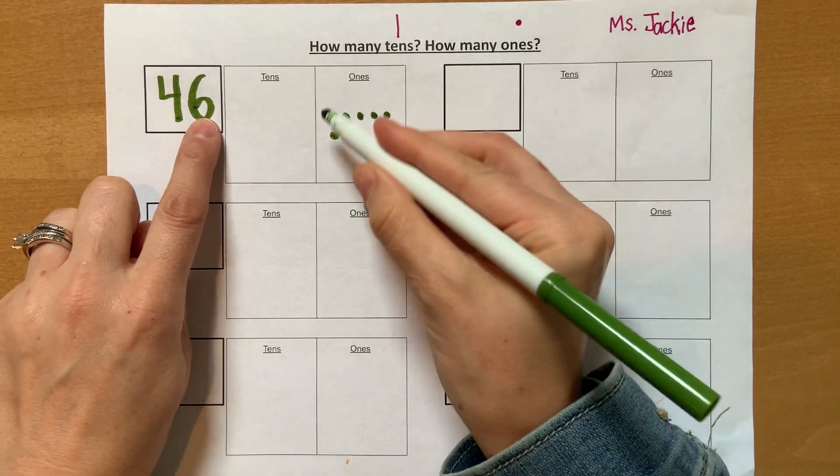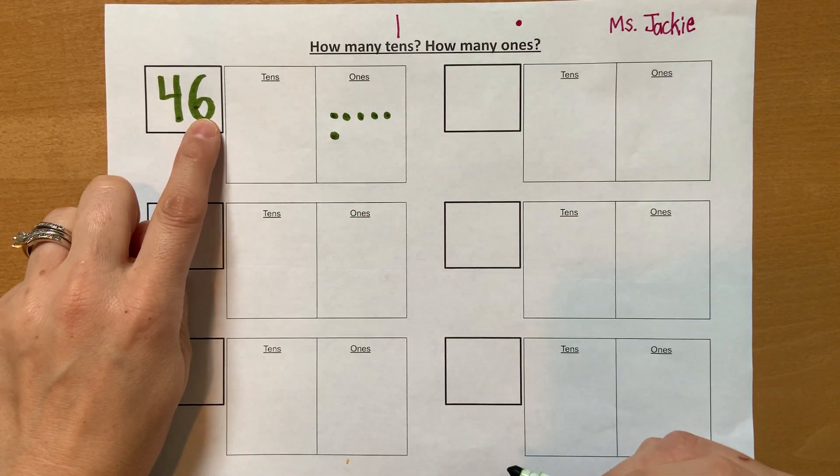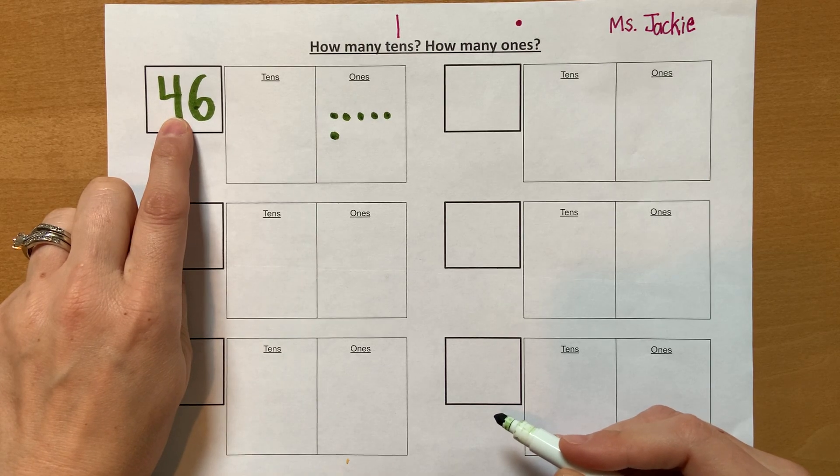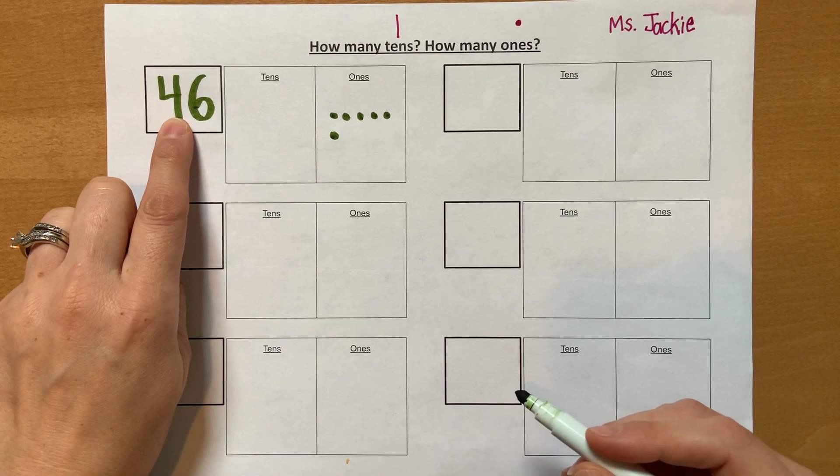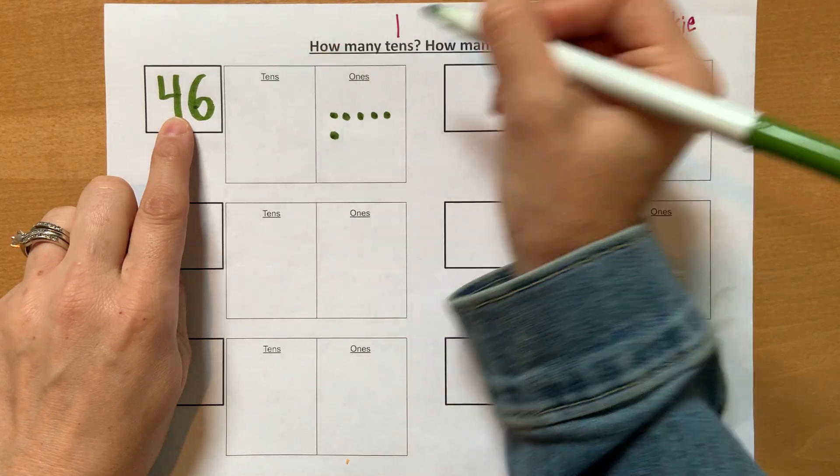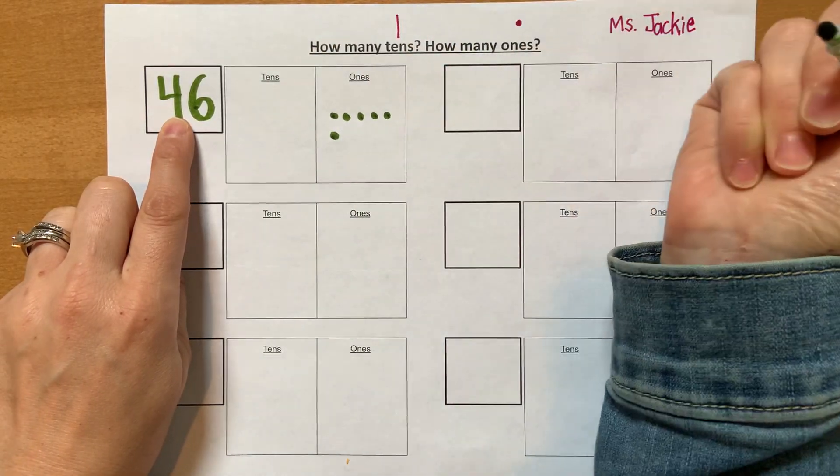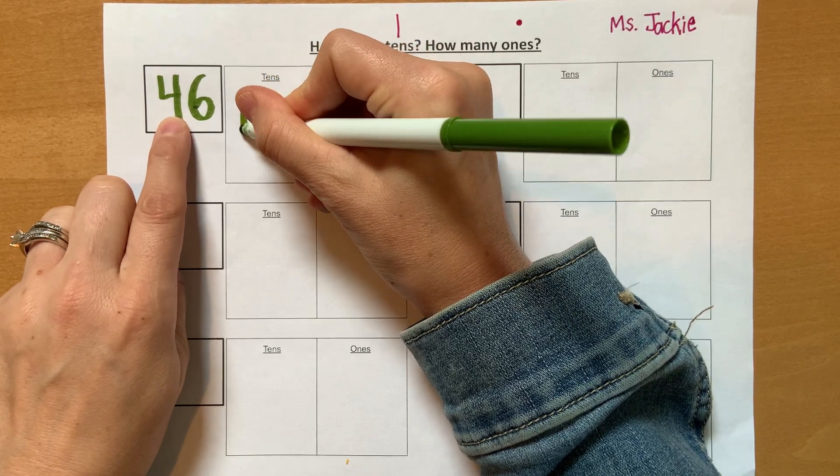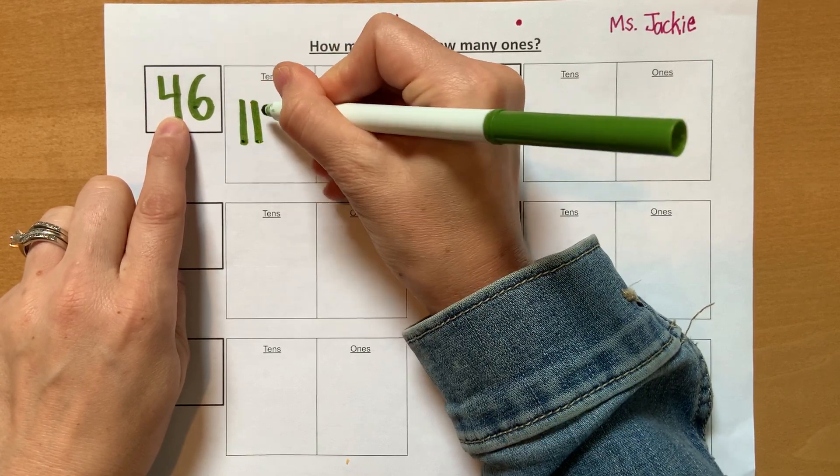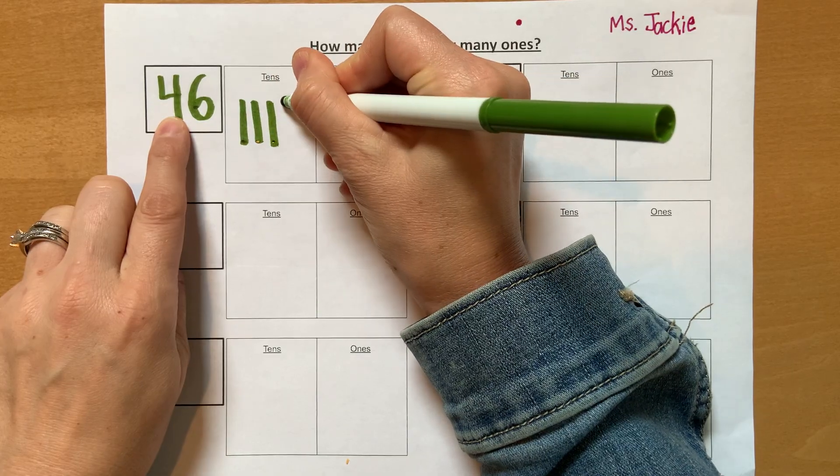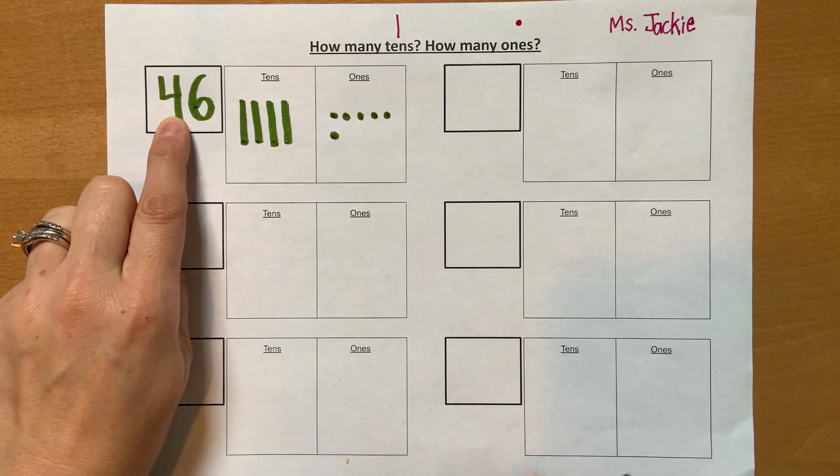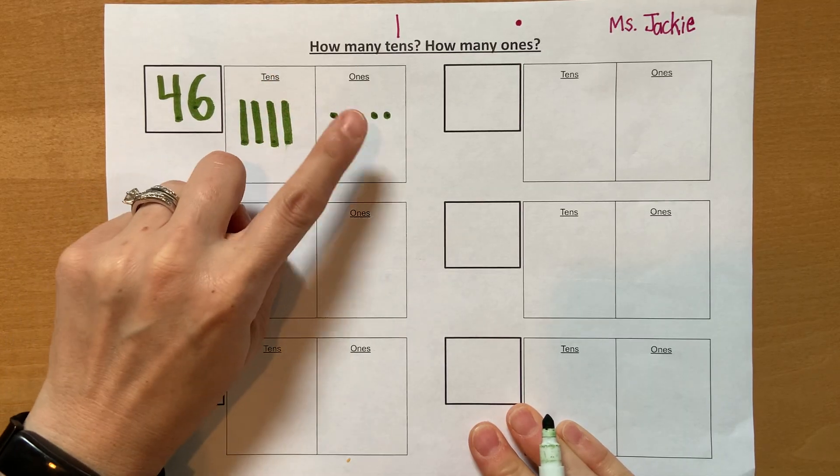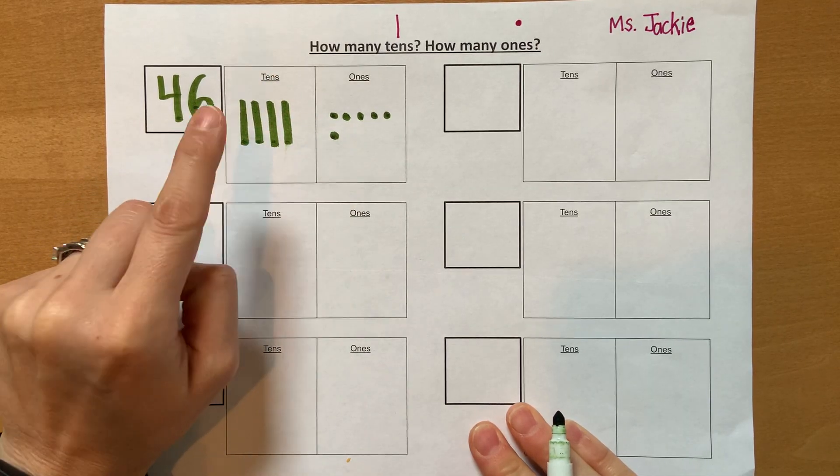Okay, so I have six ones. And you can be doing this on yours too. Now, how many tens do I have? That's right. I have four tens. So I'm going to do four sticks is what I call them. So those are four tens. So 10, 20, 30, 40. Okay, so now I have four tens and six ones. That makes the number 46.